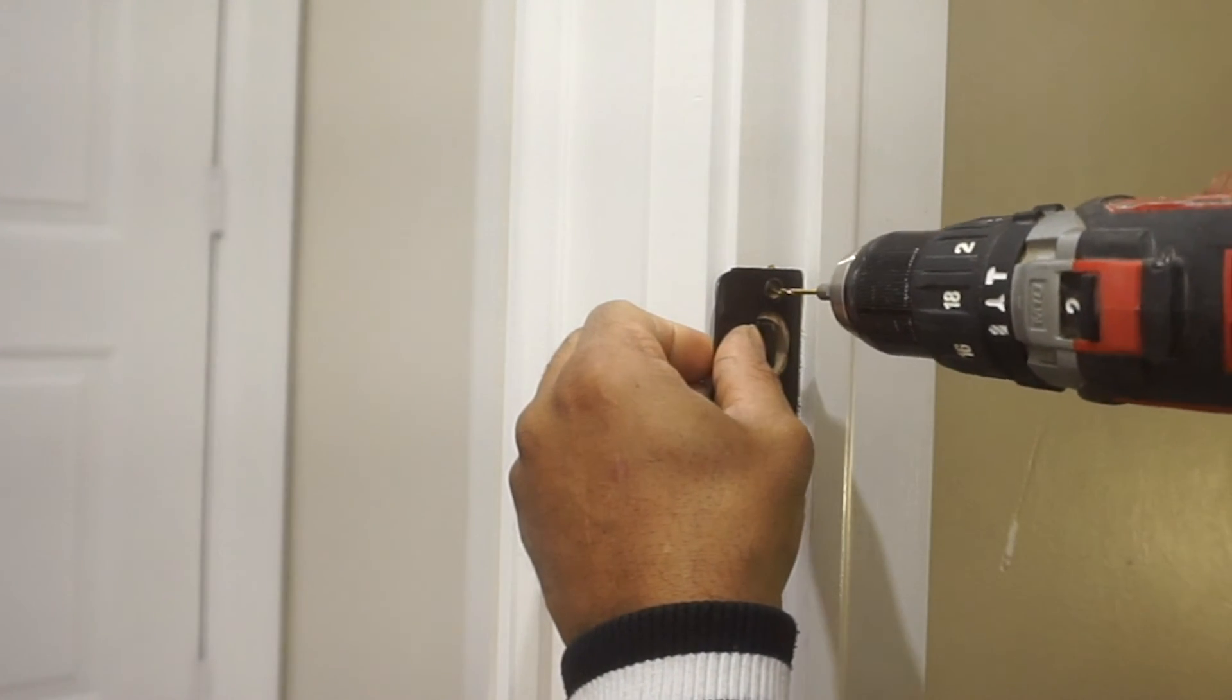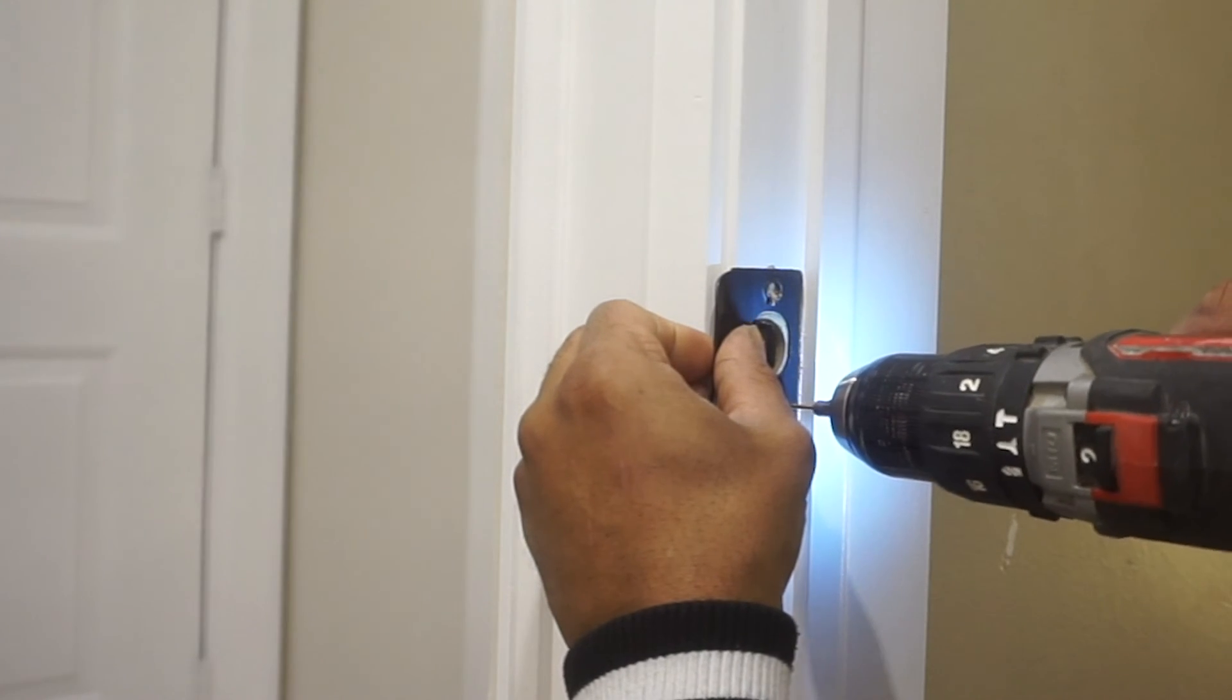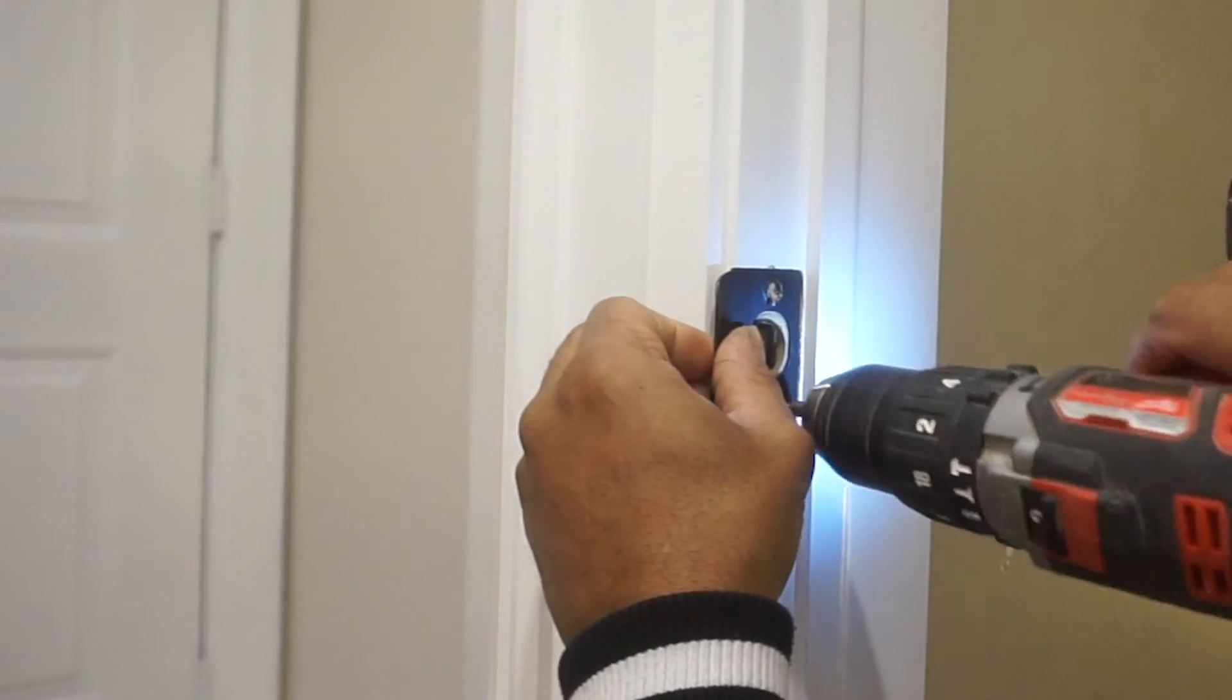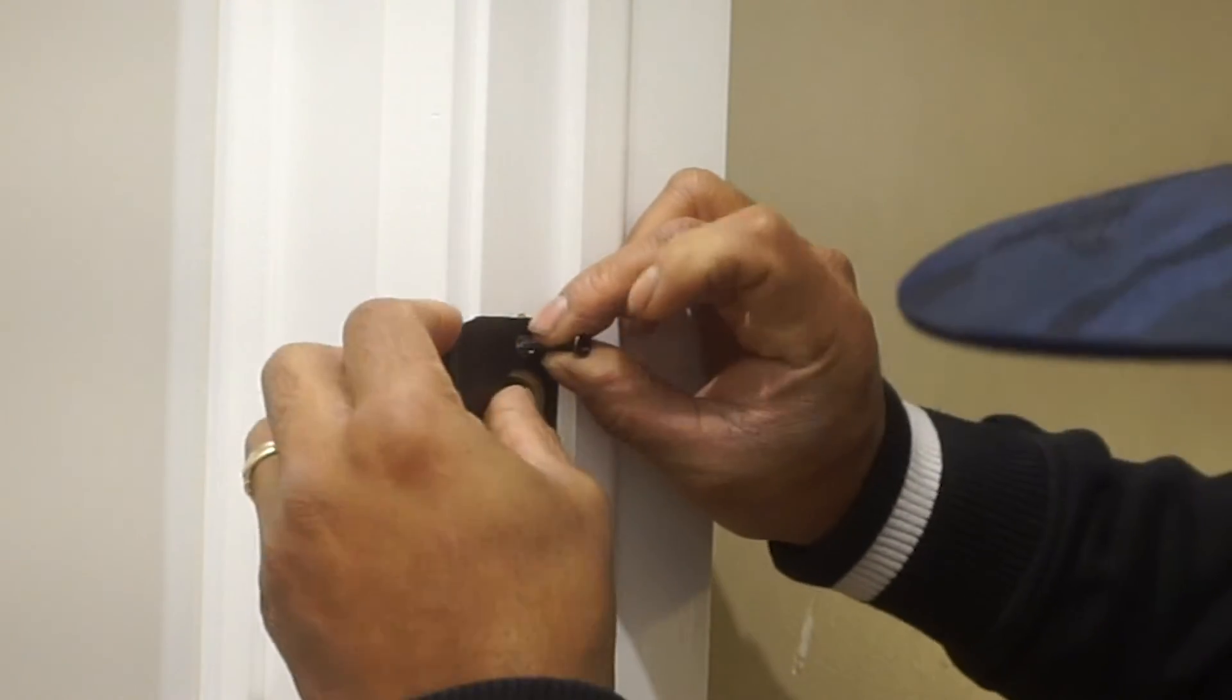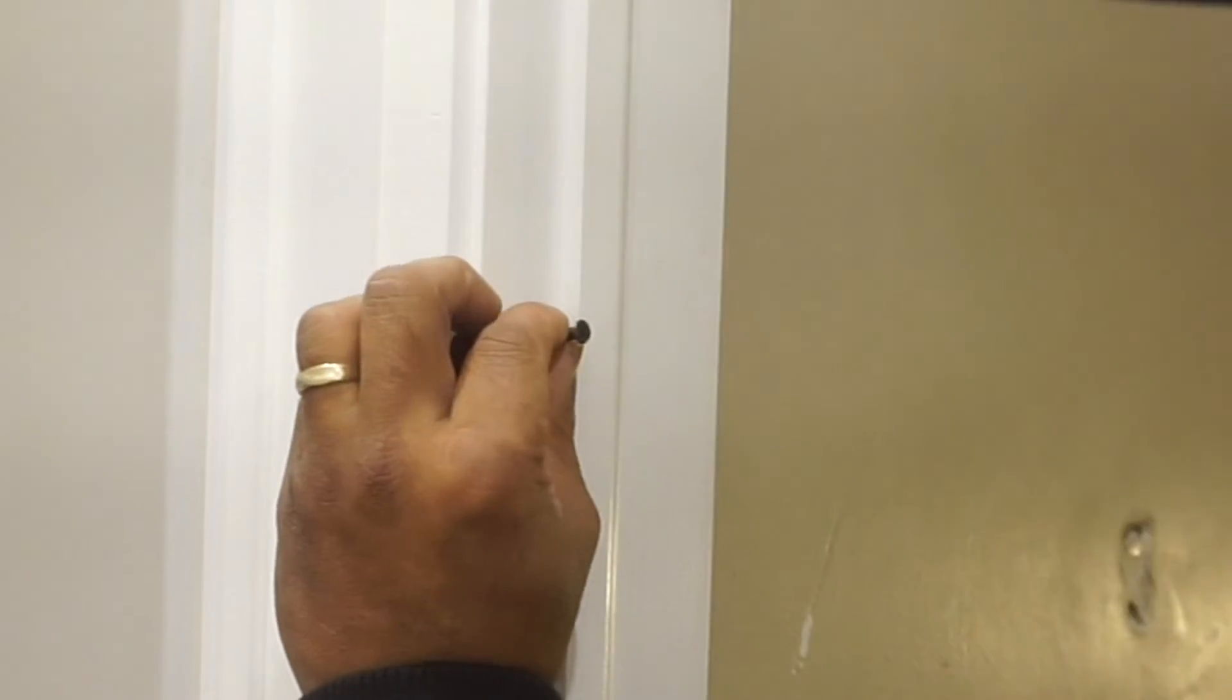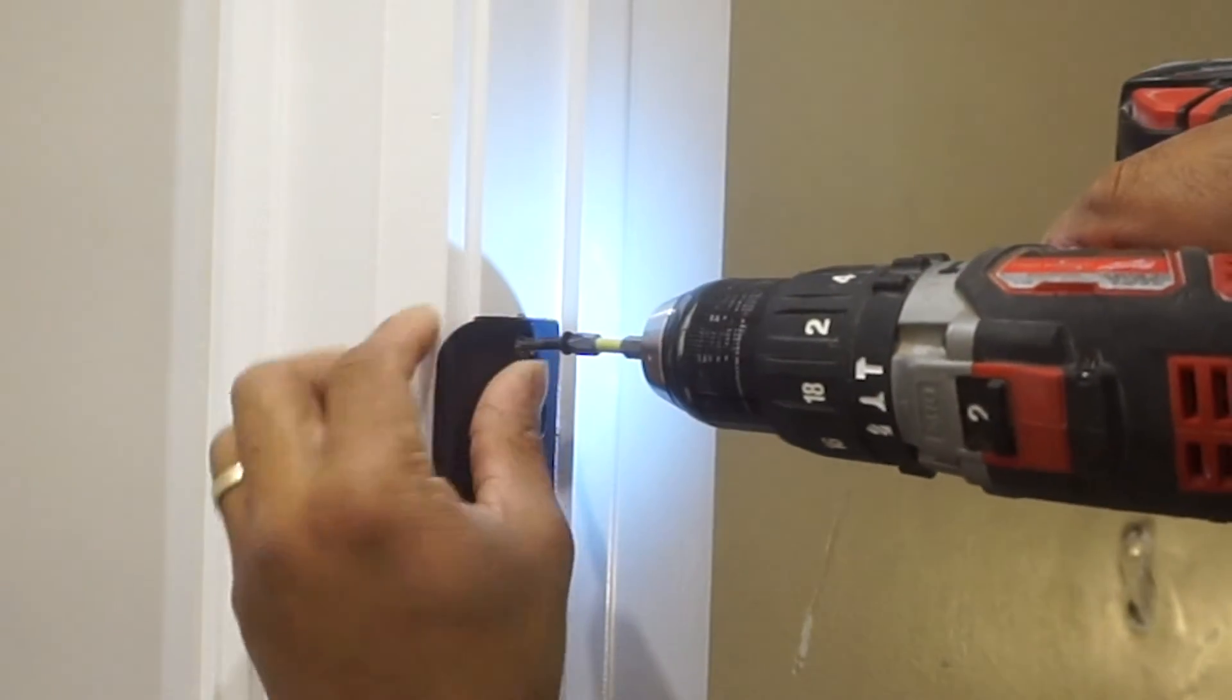Again, I'm going to make two pilot holes just so my screws are not going to move around on me when I go to drill these into the door jam itself. I'll align them in the pilot hole, screw, and that's literally it for the strike plate.